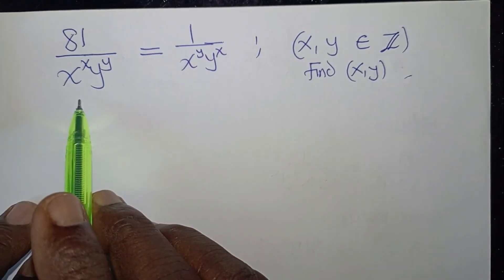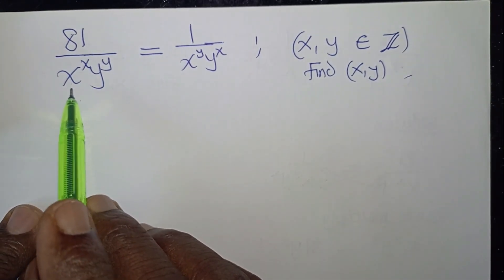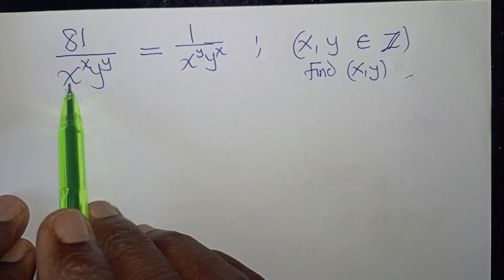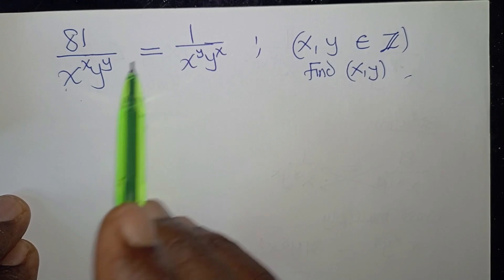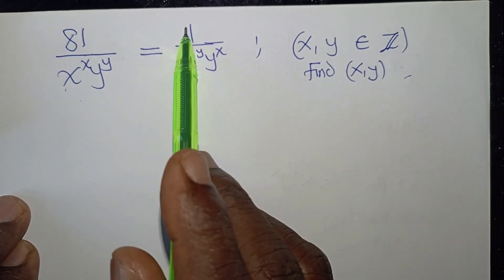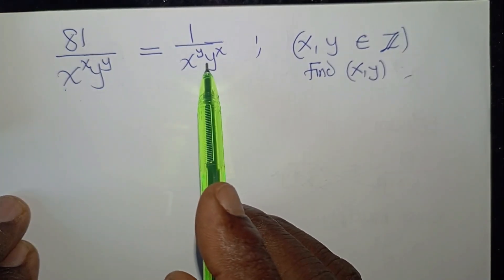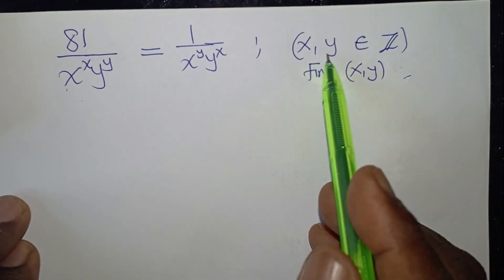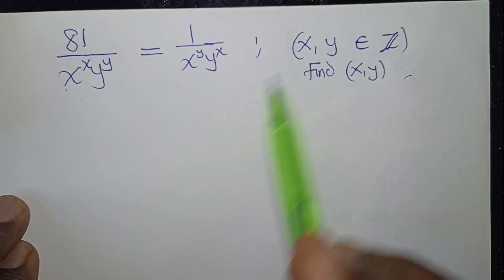Hello, welcome. We're going to look at how to provide a solution to this beautiful equation. The equation is 8 to 1 divided by x to the power x, multiplied by x to the power y, equals to 1 over x to the power y, multiplied by y to the power x. x and y are integers. Find the values of x and y.